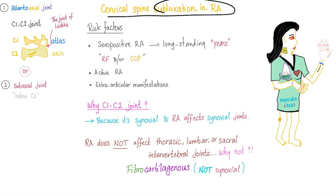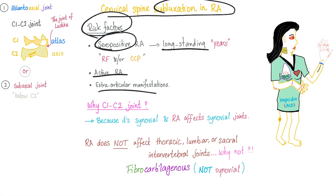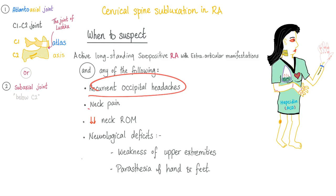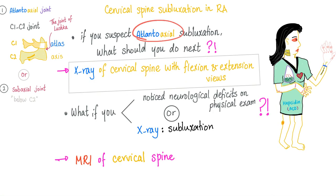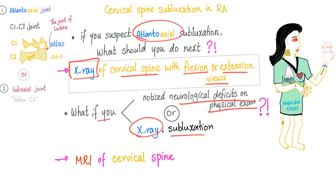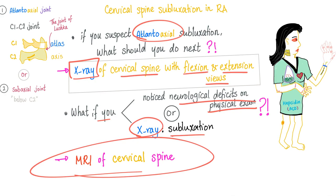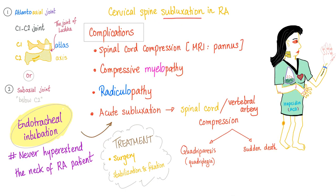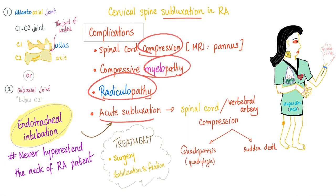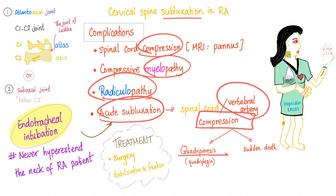Cervical spine subluxation in rheumatoid is very important. Risk factors include seropositive rheumatoid that is long-standing and active with extra-articular manifestations. C1 and C2 are affected because it is a synovial joint. The patient may complain of recurrent occipital headache, neck pain, decreased neck range of motion, and neurological deficits. If atlanto-axial subluxation is suspected, order an X-ray of the cervical spine with flexion and extension views. If the X-ray shows subluxation or neurological deficits are found on exam, the next step is MRI of the spine. Complications include cord compression, myelopathy, radiculopathy, and acute subluxation with compression that can affect arteries, leading to quadriparesis or even sudden death. Treatment is surgery.